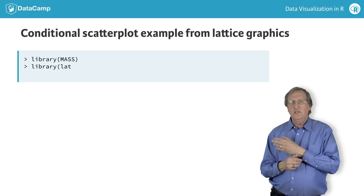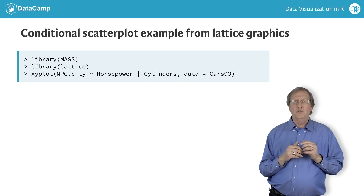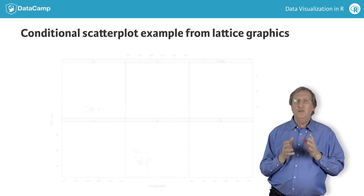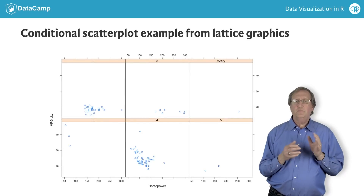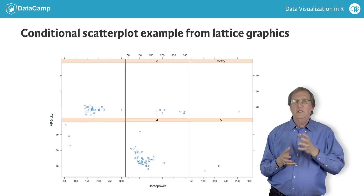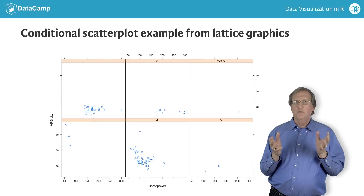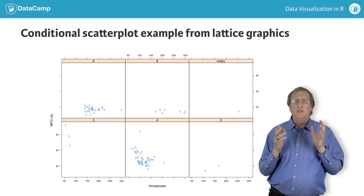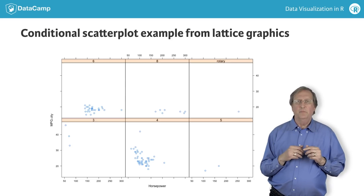This third example illustrates the use of the lattice package, which makes it easy to construct conditional scatter plots like the one shown here. These plots allow us to see how the relationship between the variables, mpg city and horsepower, from the cars93 data frame change for different values of the cylinders variable.